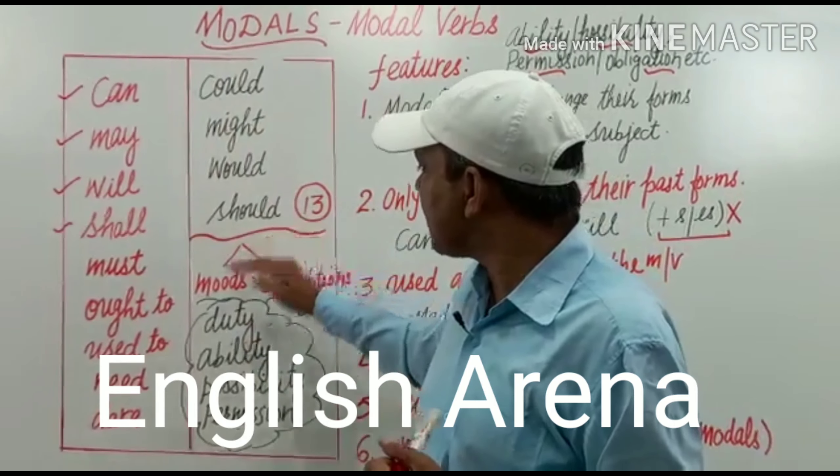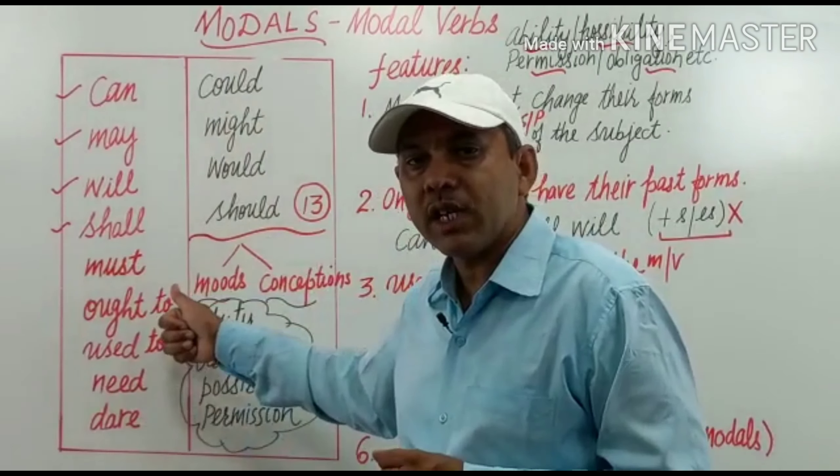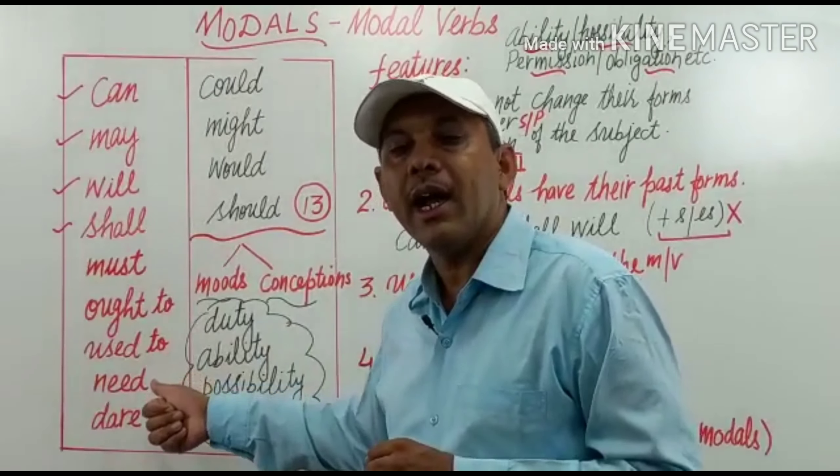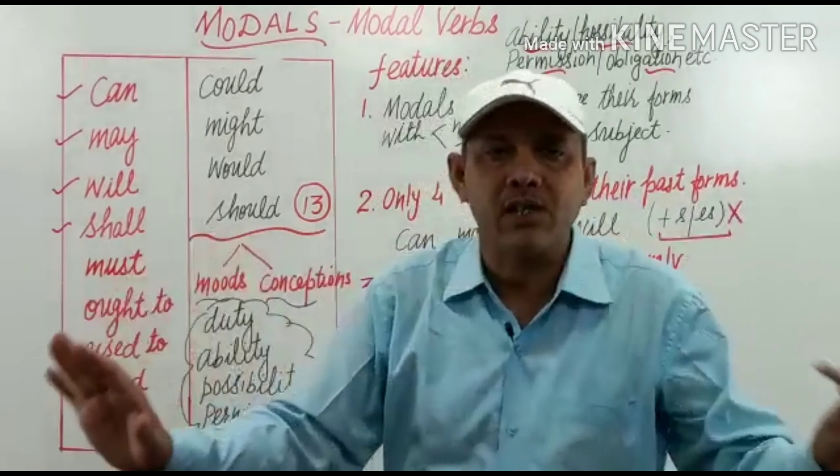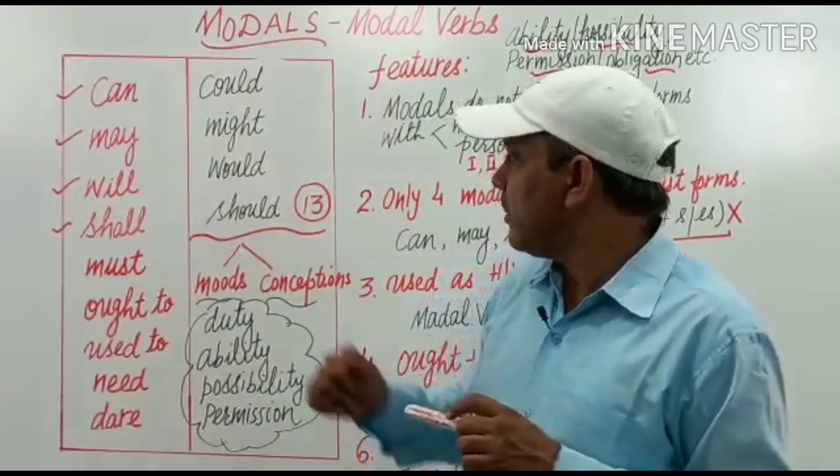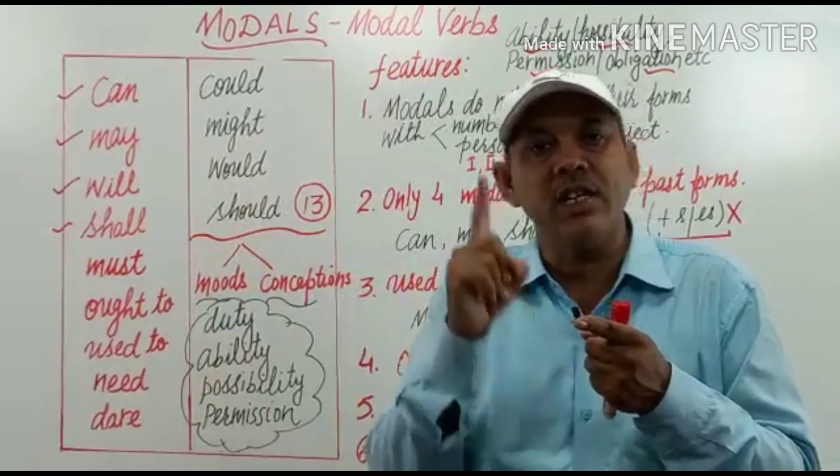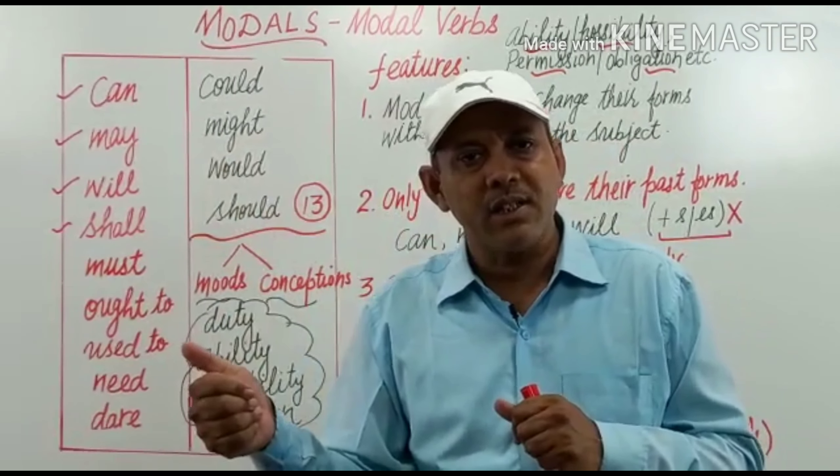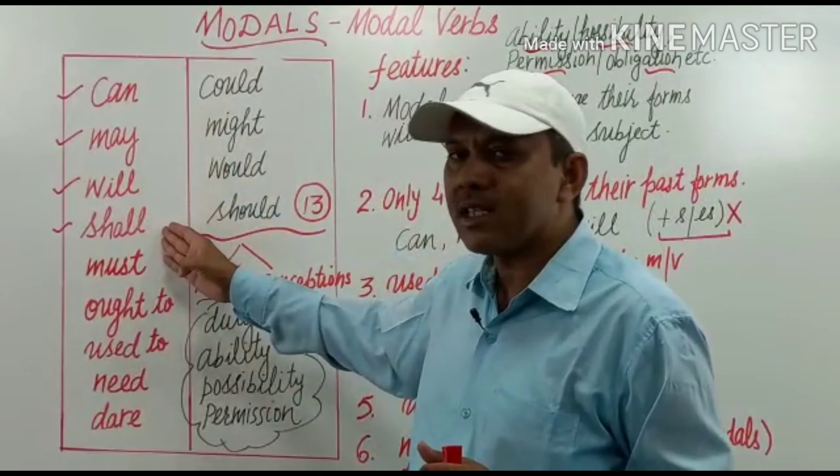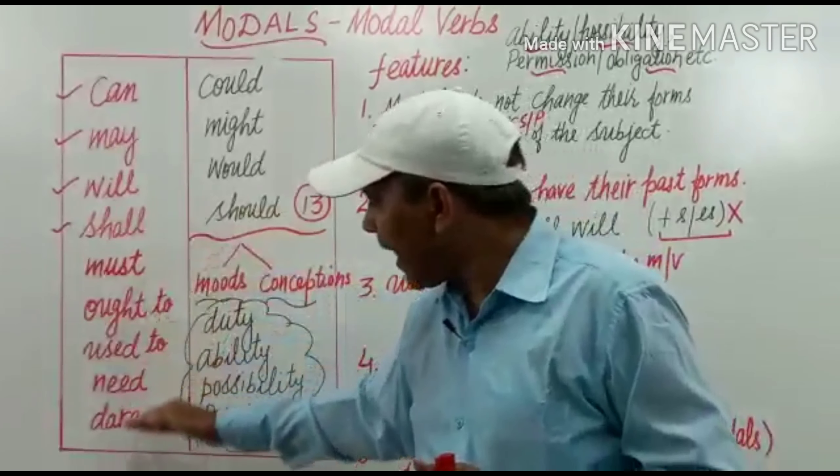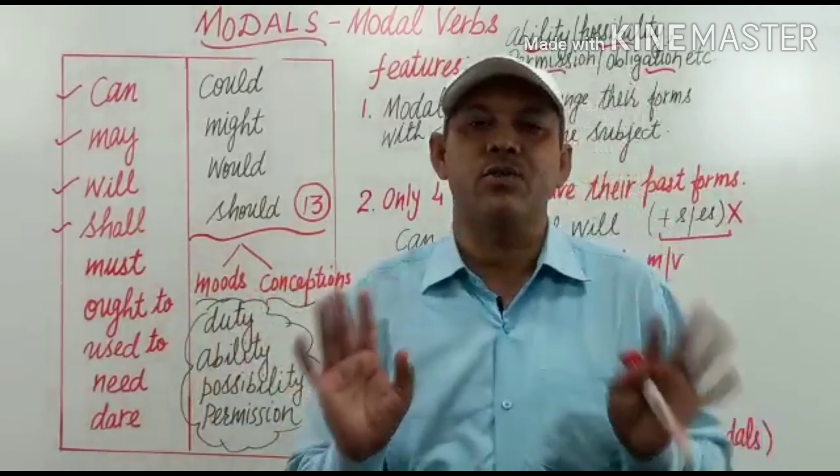Baki jo hamare paas 5 models bache, kaun-kaun se? Must, ought to, used to, need and dare, they have no past forms. Hamein do bate pata chali, models do not change with the change in number and person of the subject. Second, only these four models have their past forms. Other five models have no past forms.